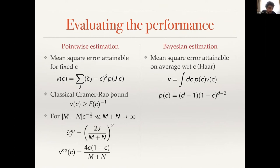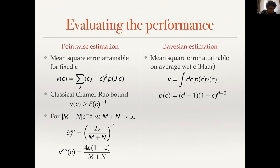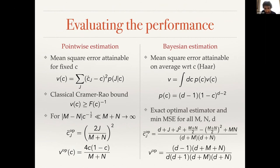In pointwise estimation, the minimum variance is bounded by the inverse of the Fisher information — here we're talking about classical quantities since the quantum part has already been handled. We compute this lower bound in the limit where we have a similar and large number of copies of both states. Notably, we not only get a lower bound but show its attainability with a specific estimator. What emerges is a factor c in the mean square error, making it go to zero when the overlap is small. In the Bayesian case, we can give an exact solution for all values of m, n, and d.